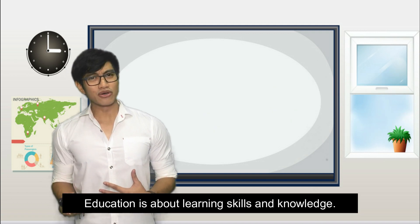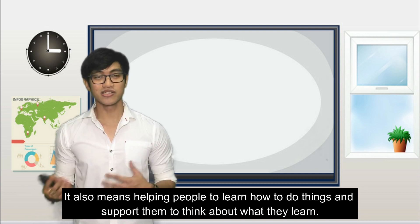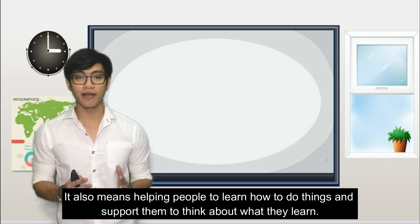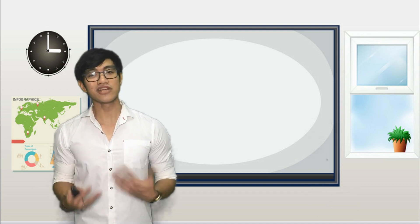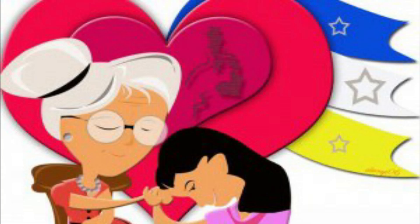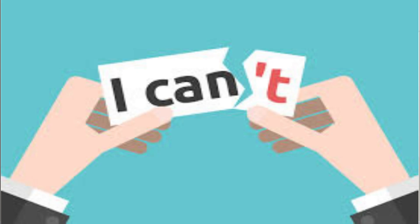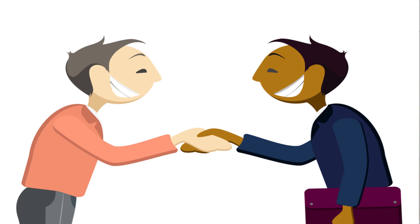Education is about learning skills and knowledge. It also means helping people to learn how to do things and supporting them to think about what they learn. It's also important for educators to teach ways to find and use information. But this is more than teaching skills and knowledge, because in education we care for the teaching of values, the improvement of personality, building of confidence, and training people to respect others.